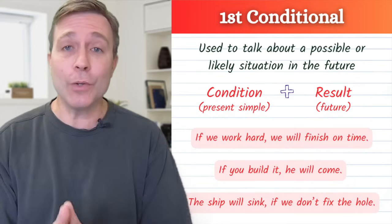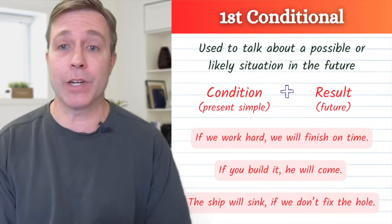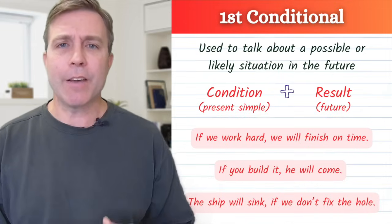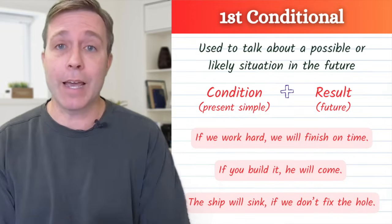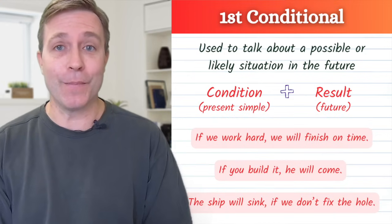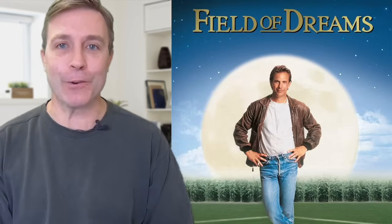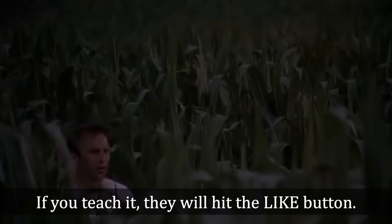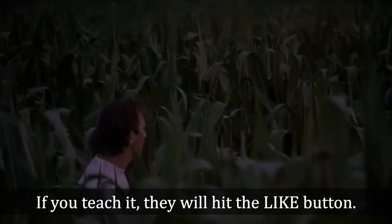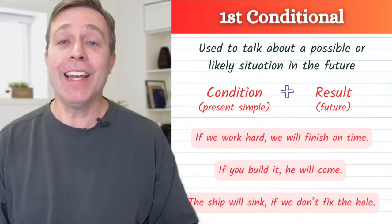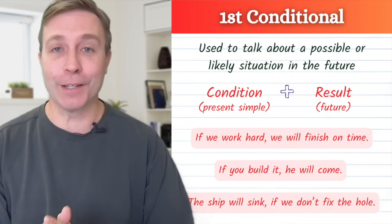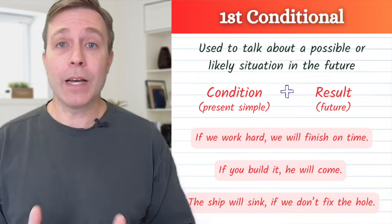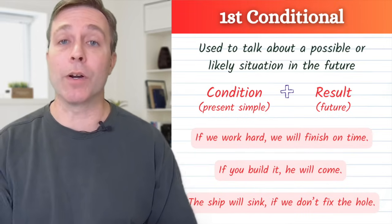The first conditional is used to talk about a possible or likely situation in the future. With the condition, we use the present simple, and for the result, we use the future. For example: if we work hard, we will finish on time. If you build it, he will come — a famous line from Field of Dreams. If you teach it, they will hit the like button. Or: the ship will sink if we don't fix the hole — here the result comes before the condition.